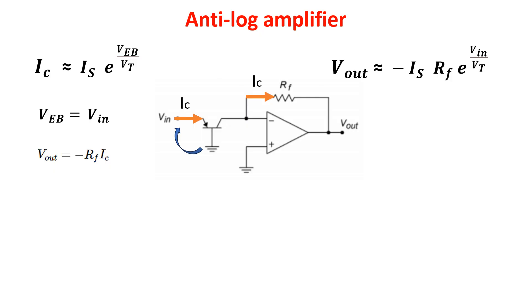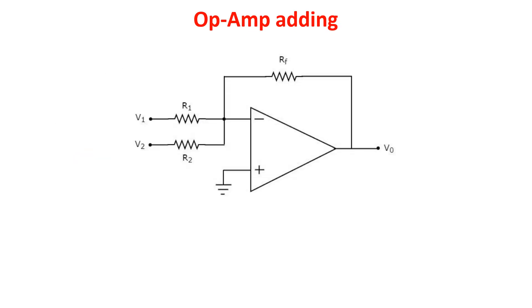Here also, the input voltage must be positive and the output voltage must be negative. Here, an op-amp used for adding two voltages V1 and V2. The current through R1 is this and the current through R2 is this one.